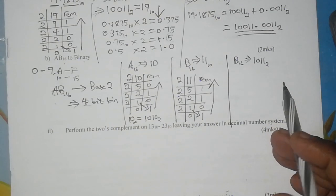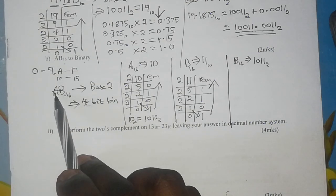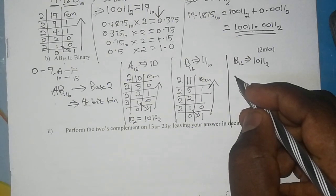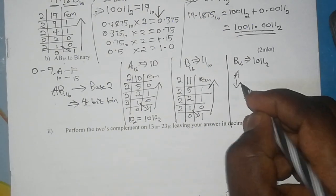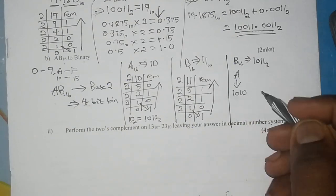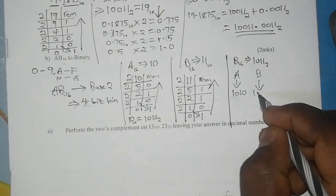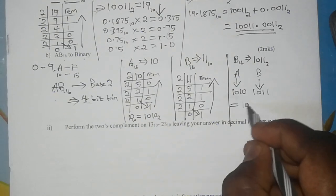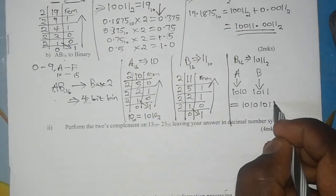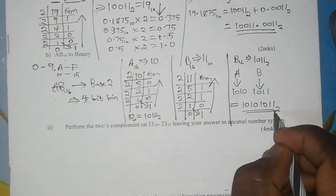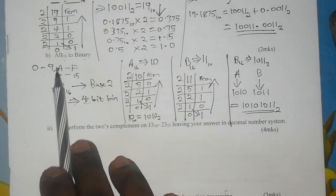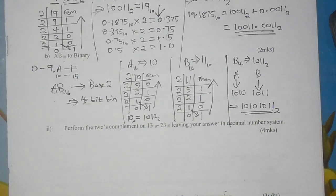The last step is to combine the result for A and the result for B, beginning from the left. A was 1010, while B was 1011. Combining these two, our final answer is 10101011 base 2. I hope you've followed and it is clear. That is how you convert hexadecimal numbers into binary numbers. We shall do something else in the next video.